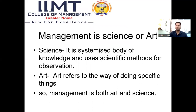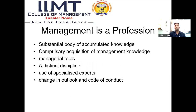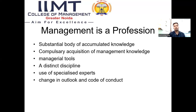Why is management a science and why is management an art? Science is the systemized body of knowledge that uses scientific methods for observation. Art is related to the way of doing specific things. So management is both science as well as art. Management is a profession also because it has a substantial body of accumulated knowledge, compulsory acquisition of management knowledge, managerial tools, a distinct discipline, use of specialized experts, and change in outlook and code of conduct.